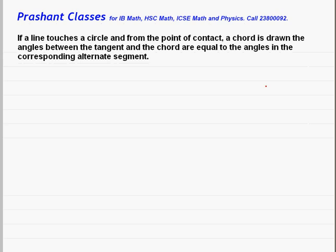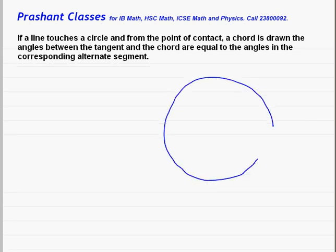If a line touches a circle, you have been given a circle and a point, and you have been given a line. They are saying that if you have a line that touches a circle and from the point of contact a chord is drawn.